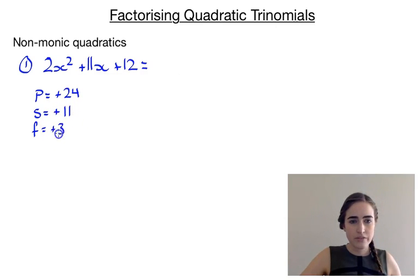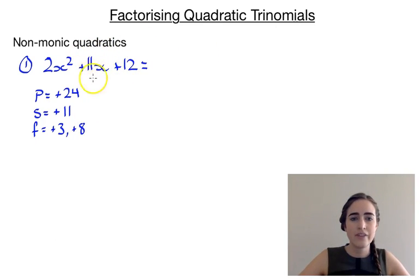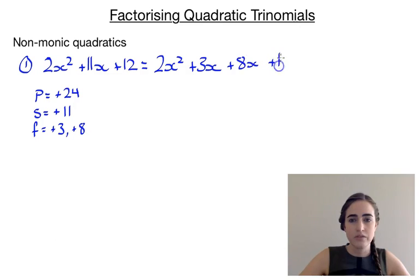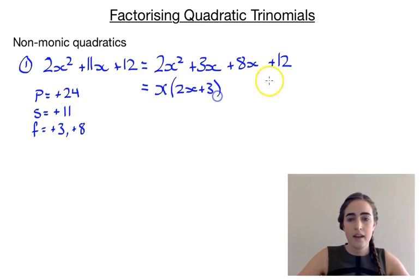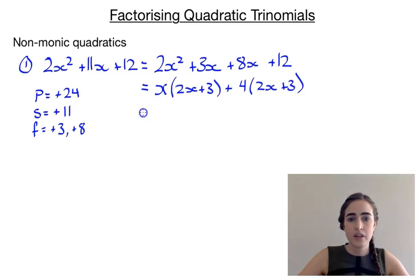That would be positive 3 and positive 8. There's an extra step: we're going to split this 11x into a 3x and an 8x. So we have 2x squared plus 3x plus 8x plus 12. We've kept the expression equivalent but split the middle term. Now we factorise by grouping. The first two terms have a common factor of x, leaving 2x plus 3. The second two terms have a common factor of 4, leaving 2x plus 3. We pull out that bracket as the common factor, giving us (2x plus 3)(x plus 4).